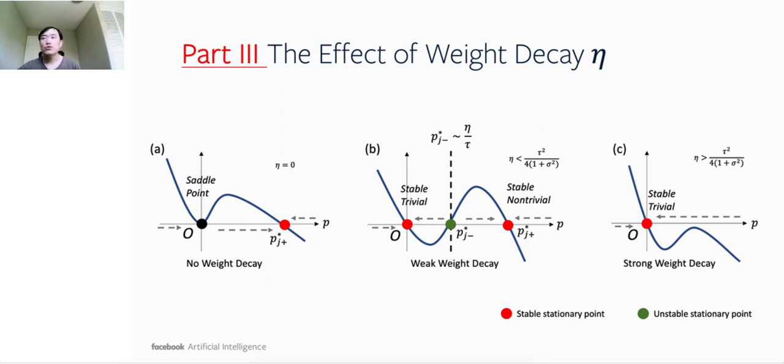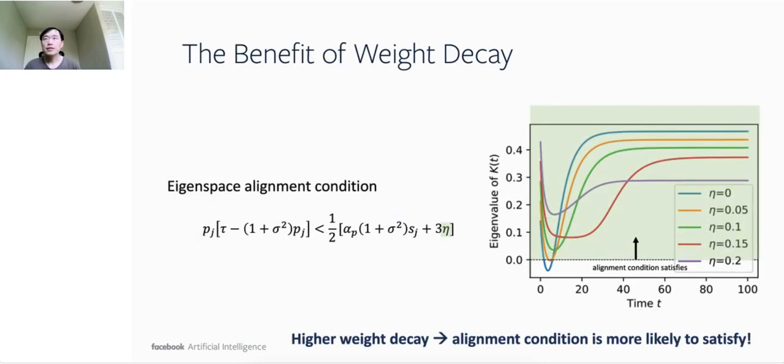From the decoupled dynamics, we can also analyze the effects of different hyperparameters. Here, we use the weight decay η as the first example. When weight decay changes, the size of the trivial basin will also change. A large weight decay leads to a large trivial basin. With strong enough weight decay, the non-trivial attractive basin can even disappear, yielding a convergence to trivial solution no matter where the initialization of p is. Since large weight decay can expand the trivial basin, people may wonder, what is the benefit of weight decay? The answer is, if the weight decay is high, then the alignment condition is more likely to satisfy. This is shown in the simulation, in particular at the beginning of the dynamics. Therefore, the best weight decay is to keep a balance between eigenspace alignment and a reasonably small trivial basin.